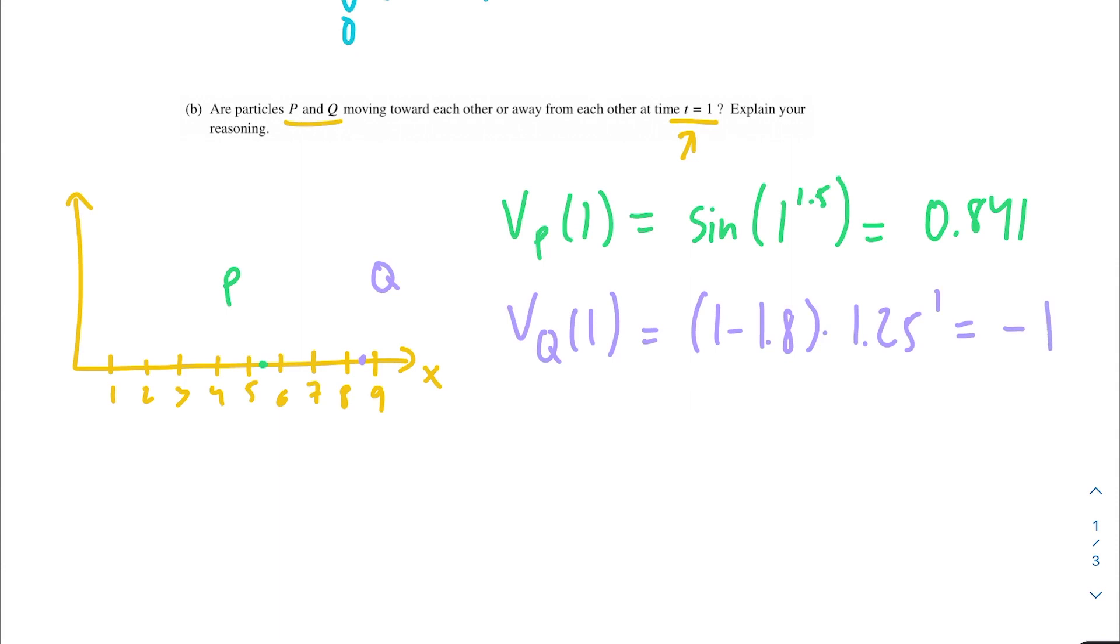Remember what I said about comparing the signs of these two velocities. Notice that the velocity of P is positive, so that means it's moving forward along the x-axis, moving away from the origin. Our Q, on the other hand, has a negative sign. The negative sign means it's moving backwards, moving towards the origin. Since we have these starting positions and particle Q is moving to the left and particle P has a positive velocity and is moving to the right, they're moving towards each other.